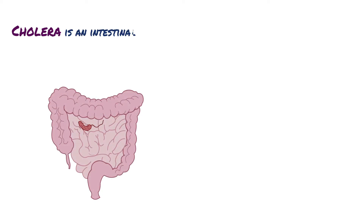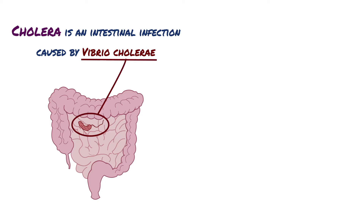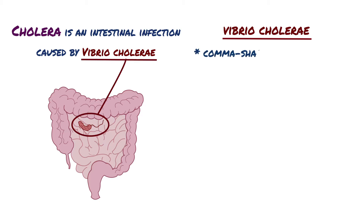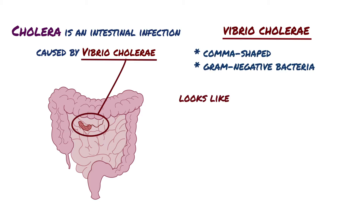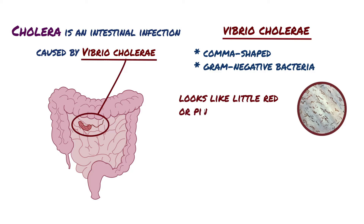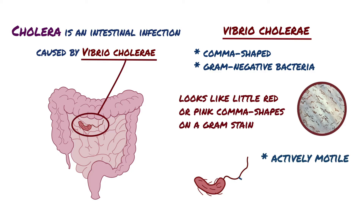Cholera is an intestinal infection caused by Vibrio cholerae. Vibrio cholerae organisms are comma-shaped gram-negative bacteria, which look like little red or pink comma shapes on a gram stain. Vibrio cholerae is actively motile through a flagellum, which it uses for movement through the gastrointestinal tract.